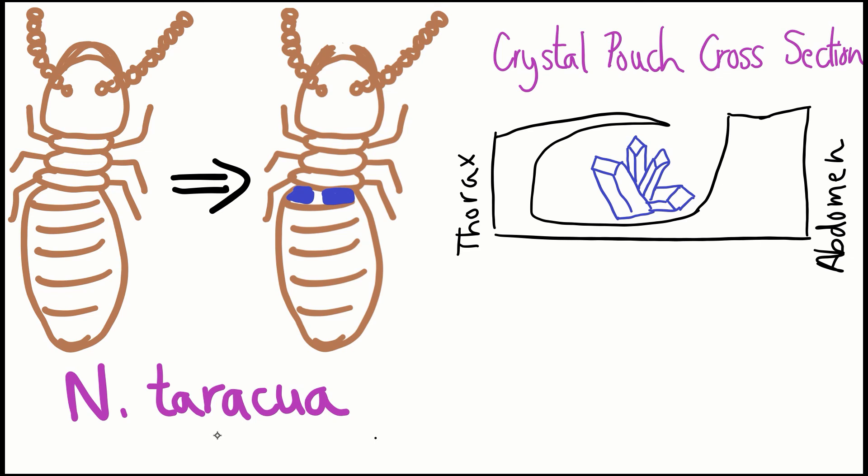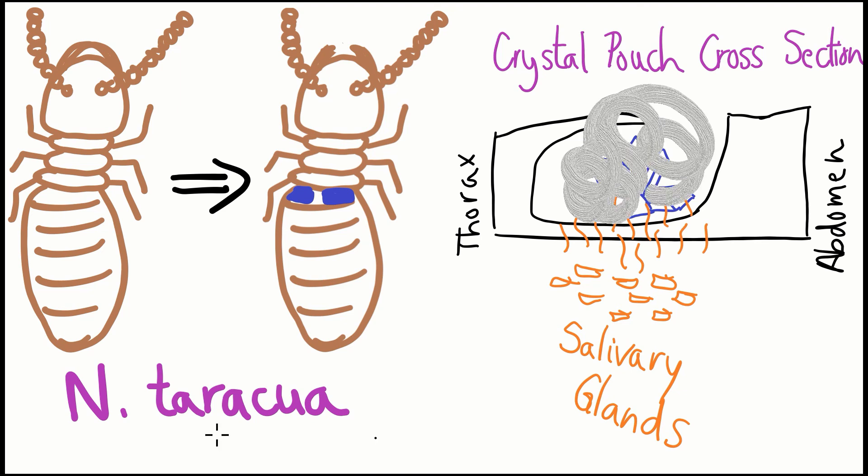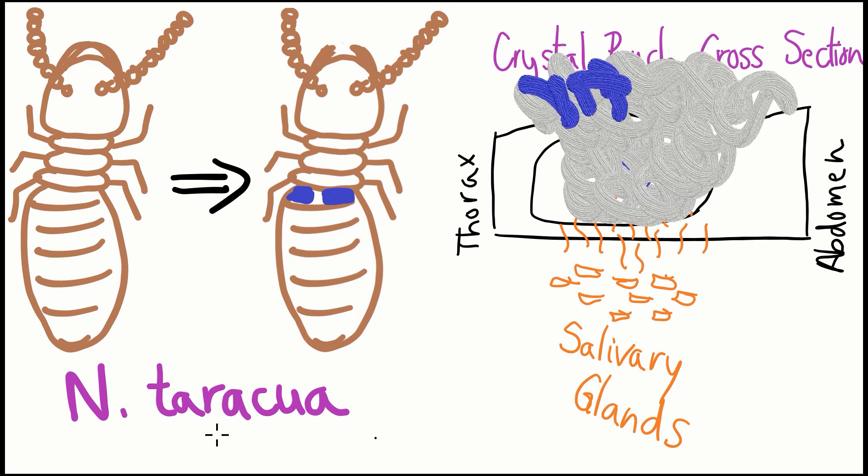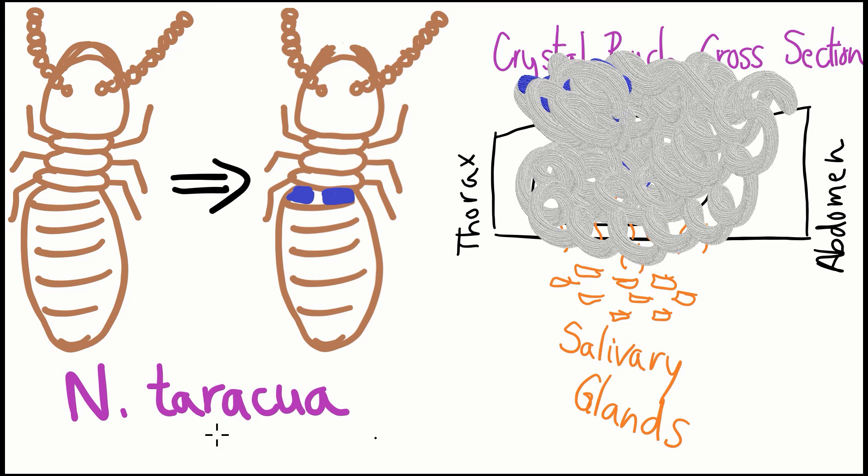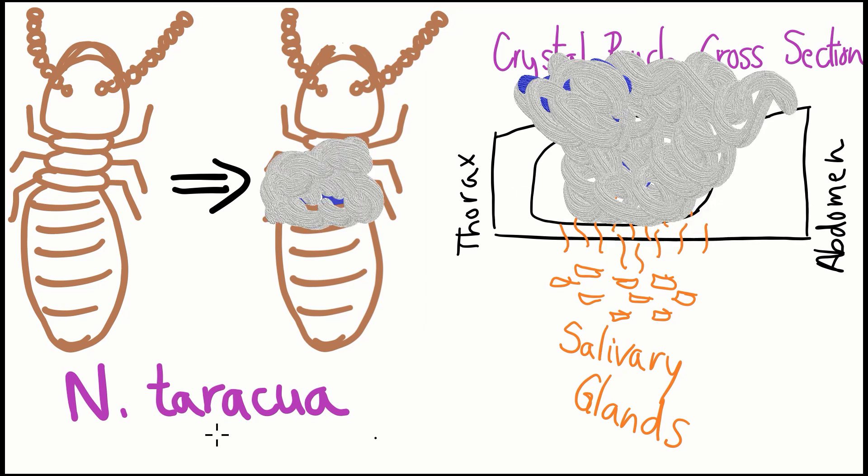When the crystal comes into contact with saliva from a gland under the exoskeleton, it causes a chemical reaction that explodes out of the termite's body, which kills not only the worker, but also the intruder. I have to admit, the life of a termite doesn't seem easy. I almost feel bad for the little workers.